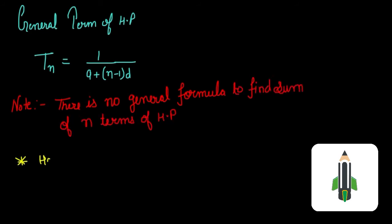Now harmonic mean. The formula of harmonic mean is equal to 2AB divided by A plus B.